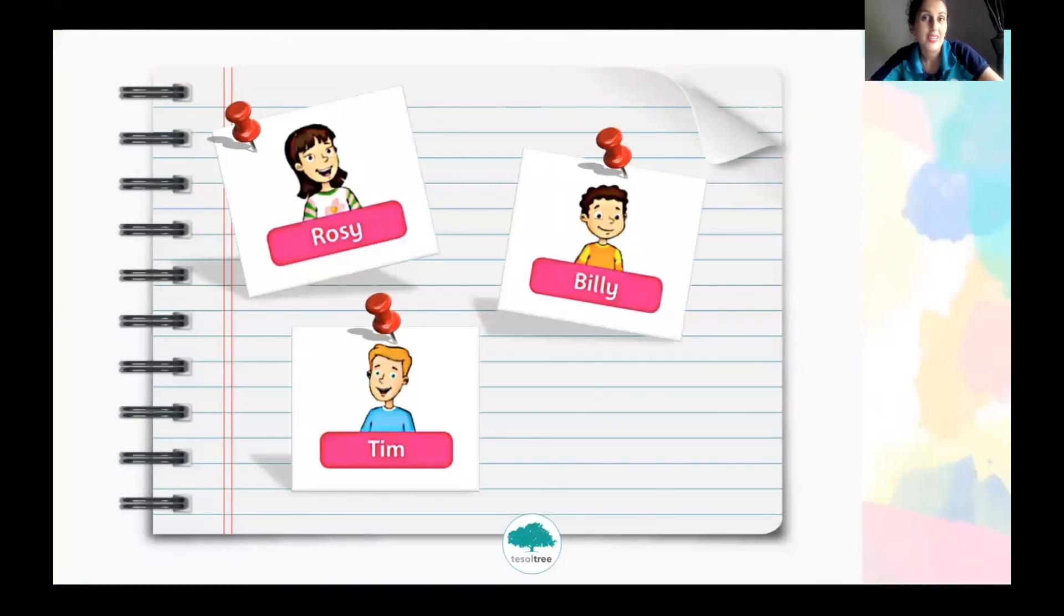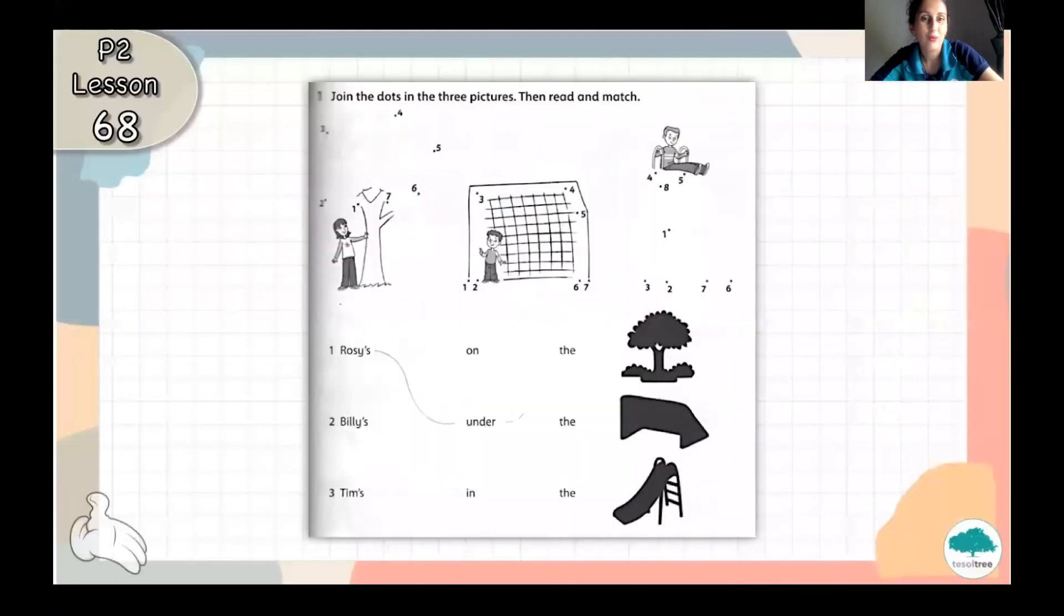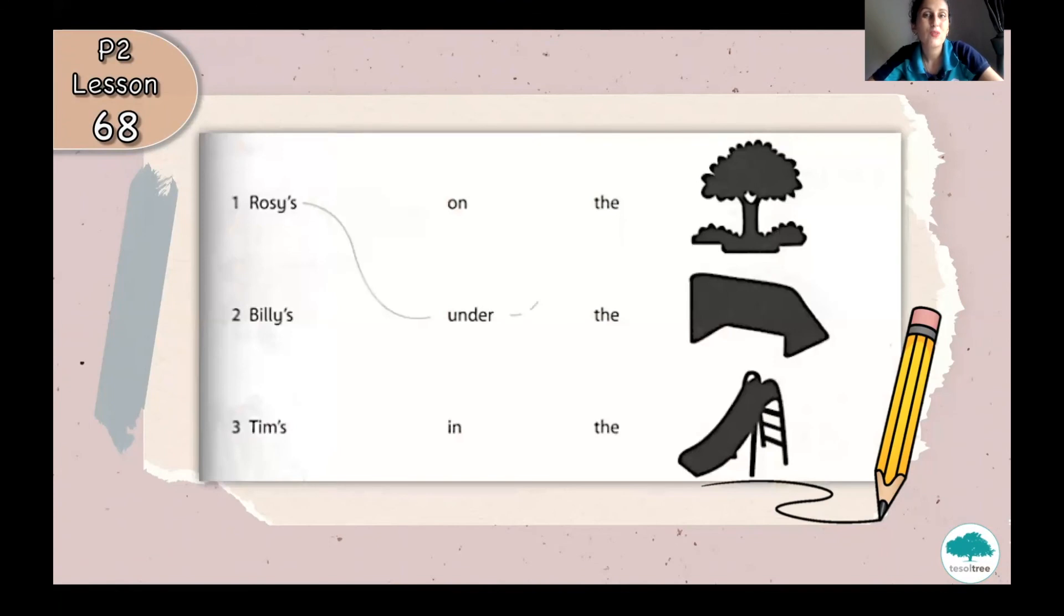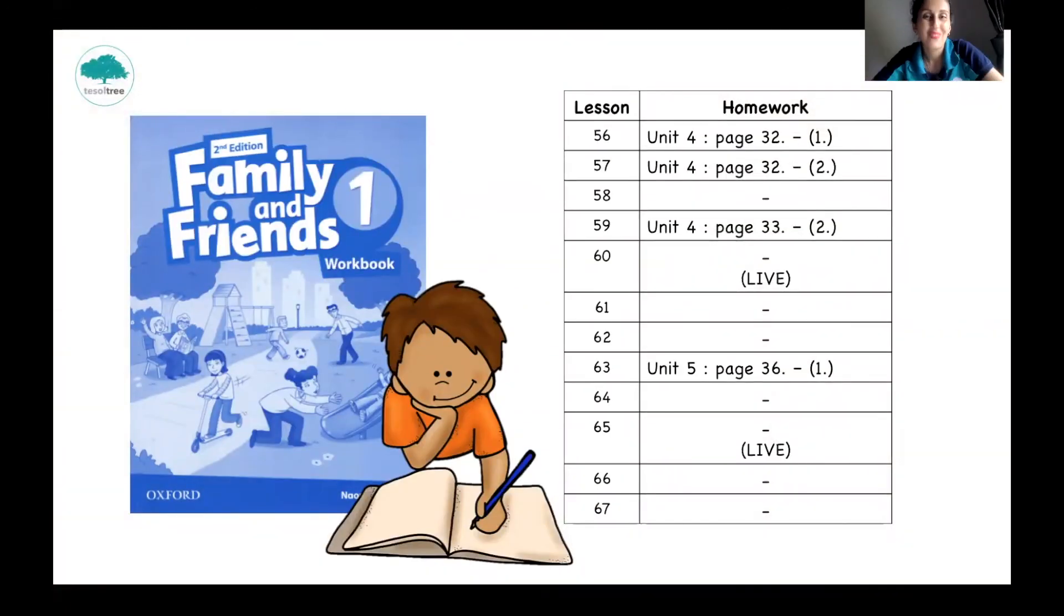Rosie, Billy, and Team are going to the playground. You have to join the dots in three pictures. First of all, you have to use your pencil and to join the dots. The pictures are not finished. I want you to finish it. And then you have to read three sentences to use your pencil, to draw a line, and to match everything. For example, number one, Rosie's under the beep. Let's check your homework on our next lesson.